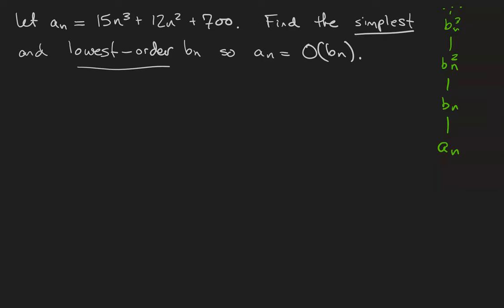So we want to find the simplest and lowest order function such that an is big O of bn. If you remember the addition principle from the last video, we know that really what we're looking for is the highest order term, and that's going to be 15n cubed.